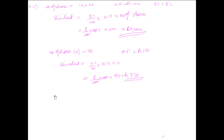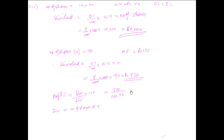The second part is the percentage return on his investment. Profit percentage = (dividend / investment) × 100. Investment = number of shares × market value = 90 × 150 = ₹13,500. So percentage return = (720 / 13,500) × 100 = 16/3 = 5.33%. That is the dividend percentage he receives.